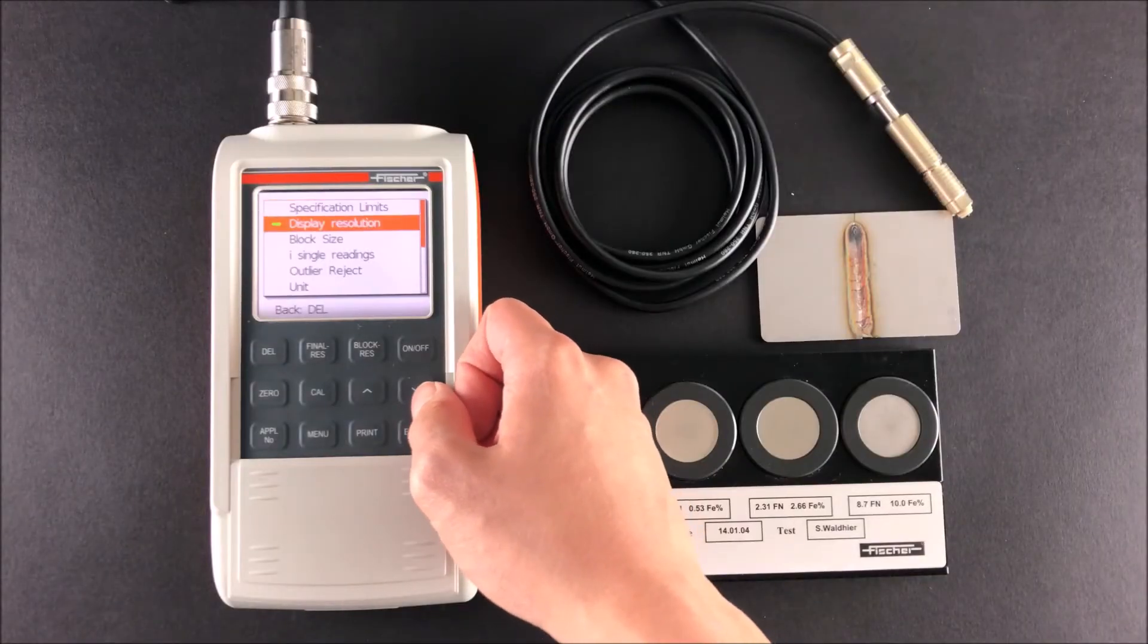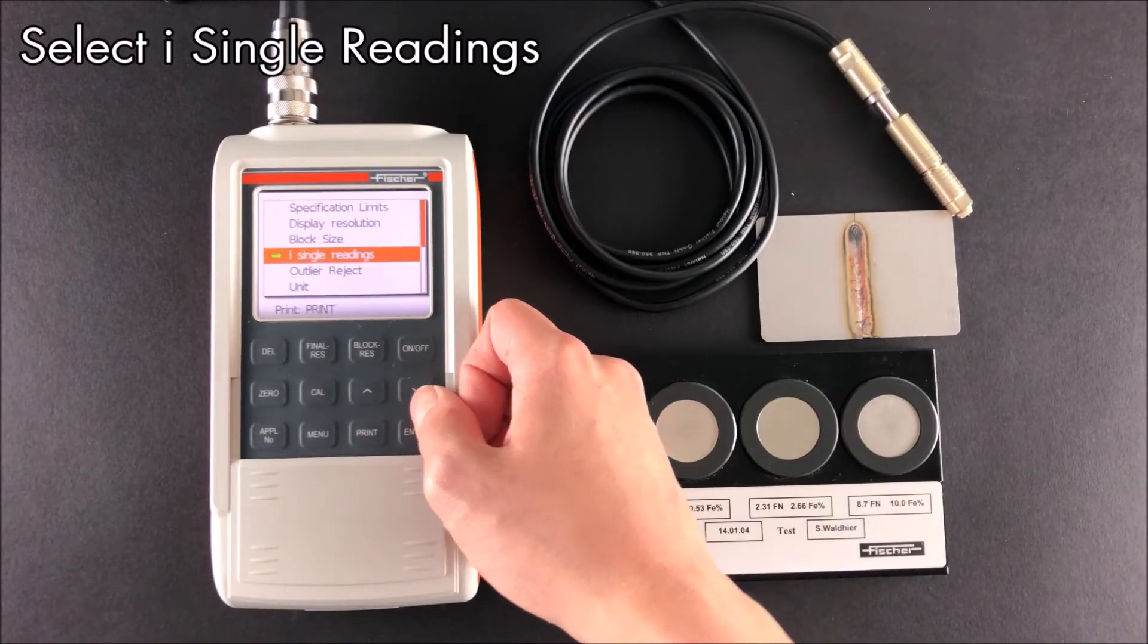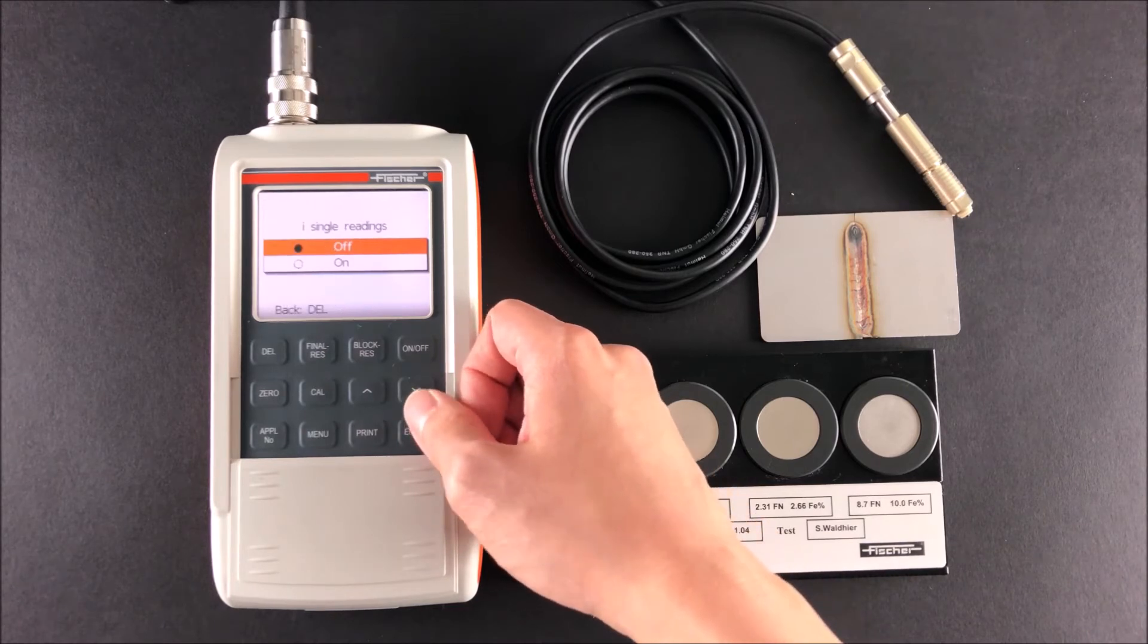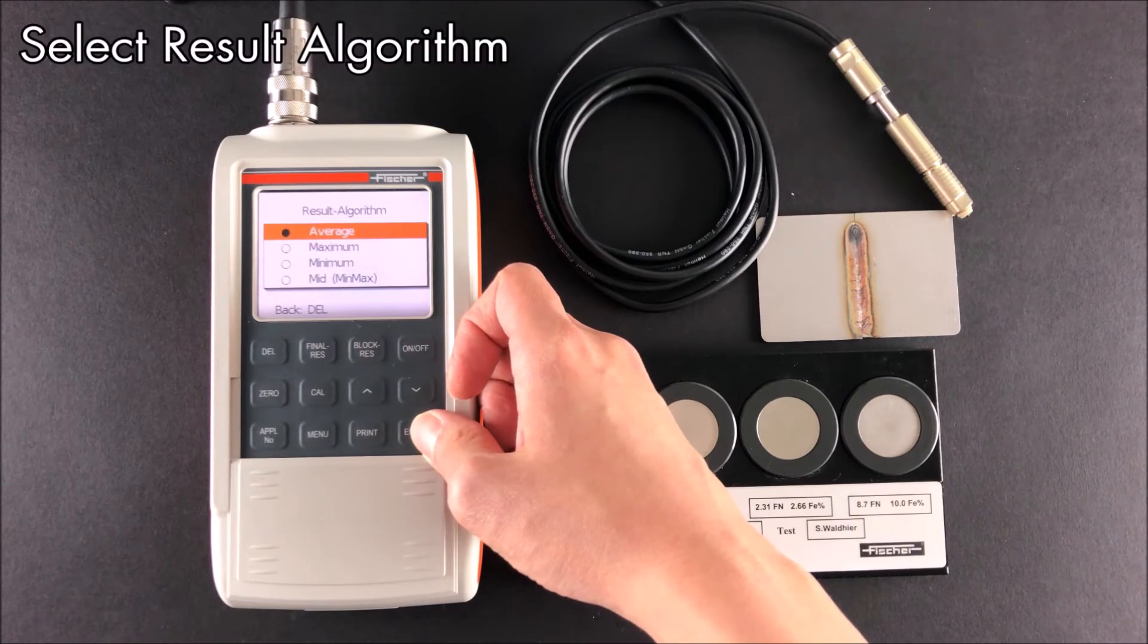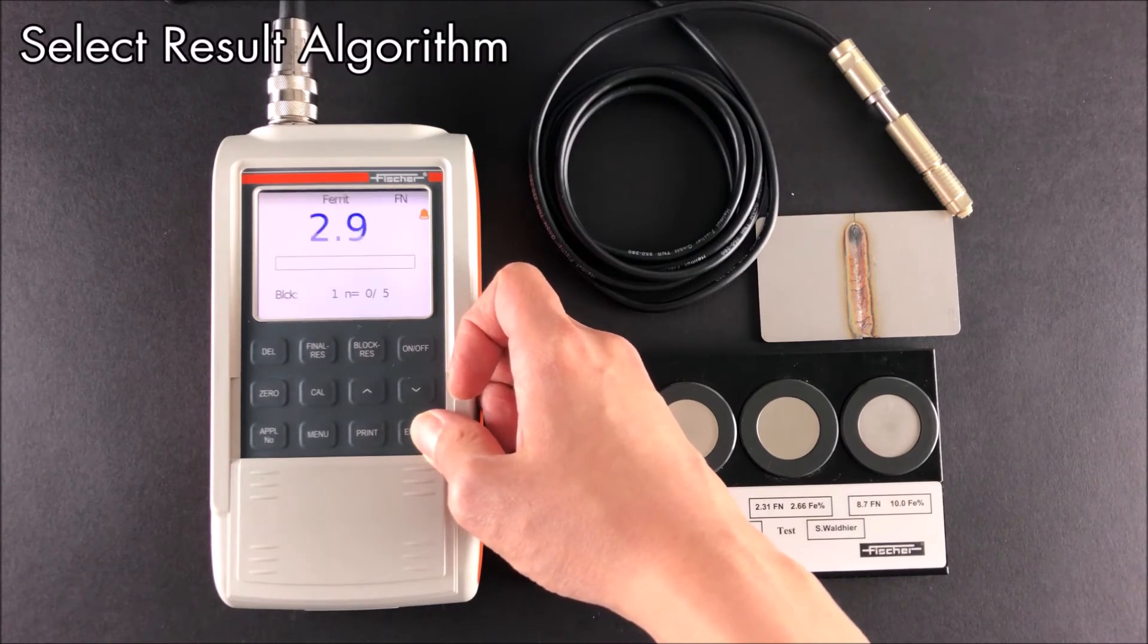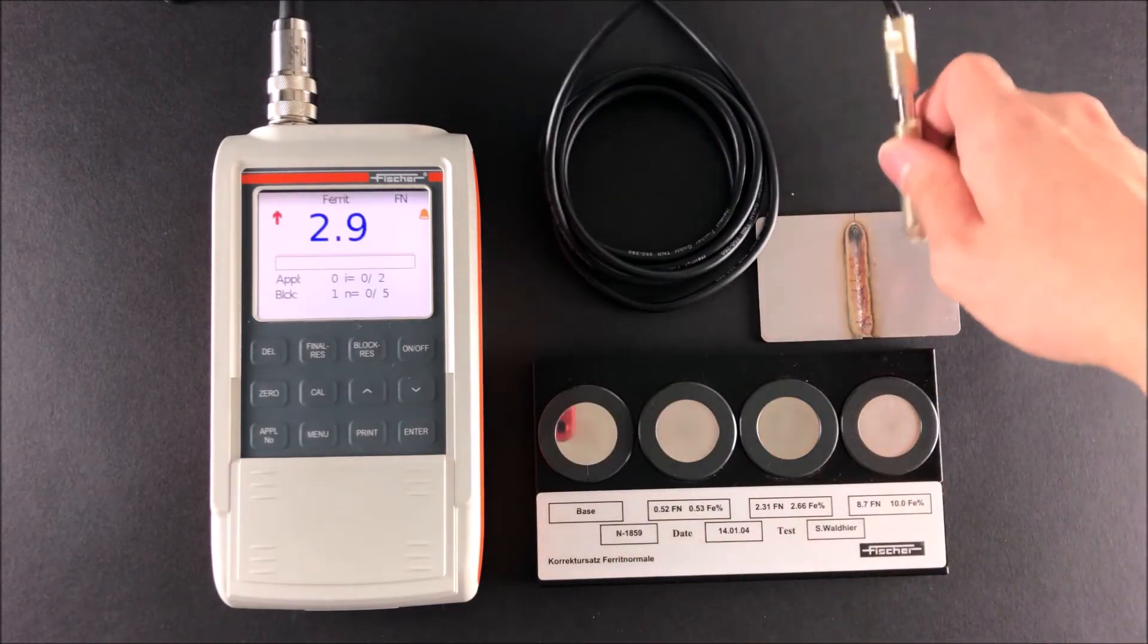N single readings is used for the computation of values instead of single readings. This is useful for measuring rough surfaces which have high standard deviations. There are four options including average, maximum, minimum, or mid.